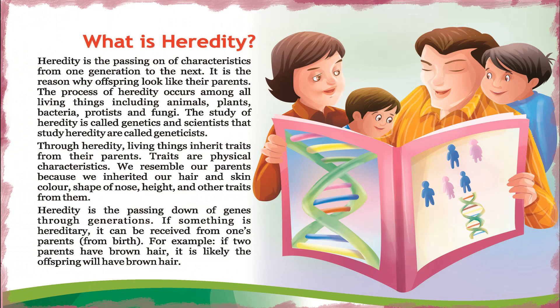What is heredity? Heredity is the passing on of characteristics from one generation to the next. It is the reason why offspring look like their parents. The process of heredity occurs among all living things, including animals, plants, bacteria, protists, and fungi. The study of heredity is called genetics, and scientists who study heredity are called geneticists. Through heredity, living things inherit traits from their parents — traits are physical characteristics.